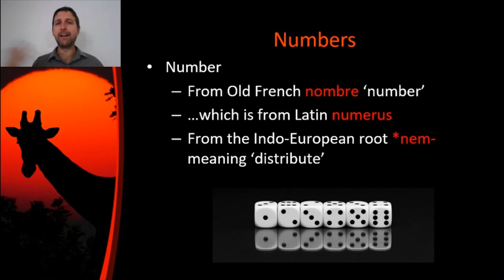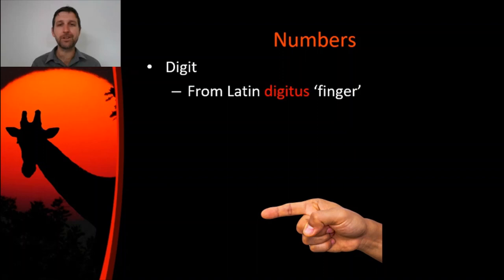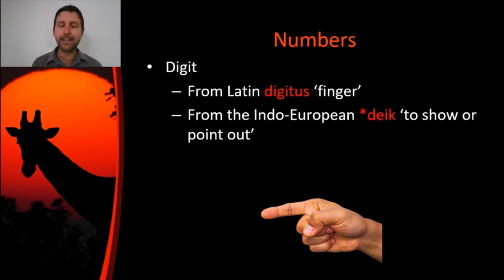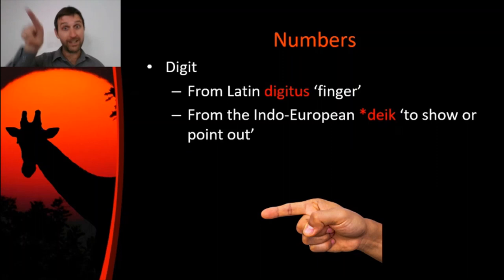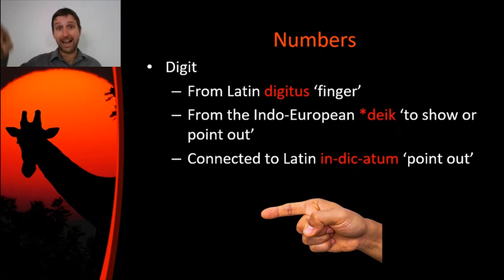Another word we have for number in English is 'digit.' Digit comes straight from Latin 'digitus' — it didn't go through Old French, which is why it looks so much like the Latin. 'Digitus' in Latin literally means 'finger,' not 'number.' But our ancestors counted numbers with their ten fingers, which is one reason we have a base-ten numbering system, so you can see why a word for finger and a word for number might be conflated. Ultimately this comes from the Indo-European root 'deik,' meaning to show or to point out. It's connected to words like 'indicate' — when you indicate something, you might use your digit to point it out.